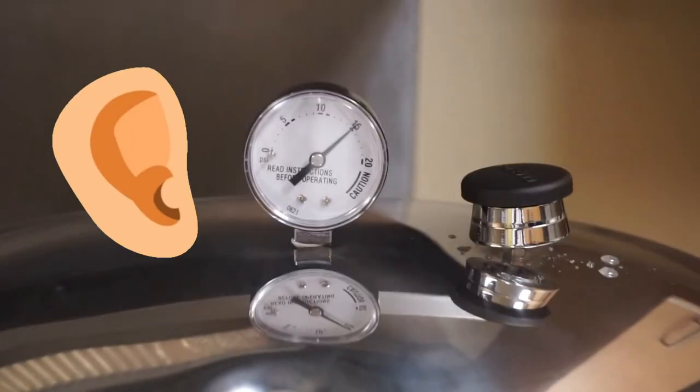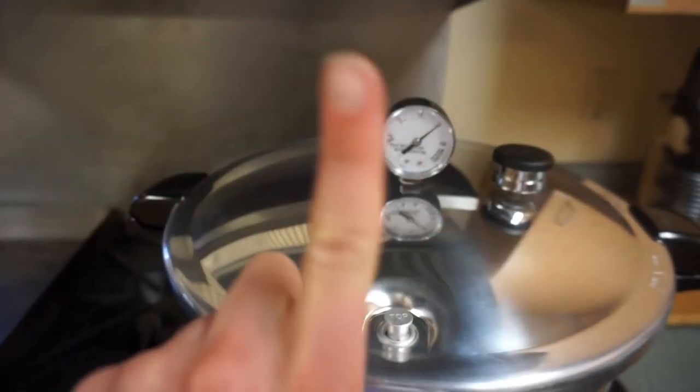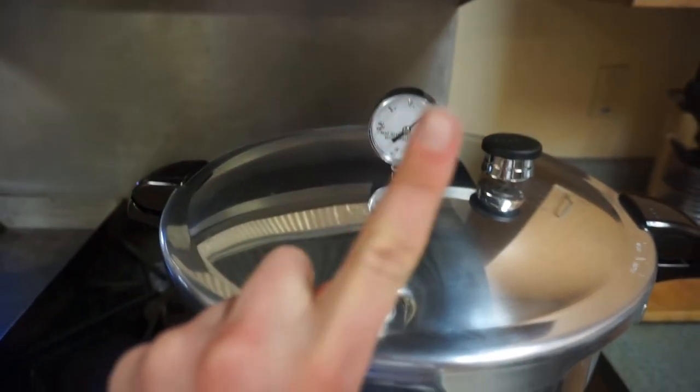Stay within earshot of the pressure cooker to ensure the pressure regulator is rattling. Turn off the heat when done. Wait for the pressure to drop to zero psi. Do not open until pressure has dropped to zero, and remove the bottle when cool enough to handle but still warm enough to remain a liquid.